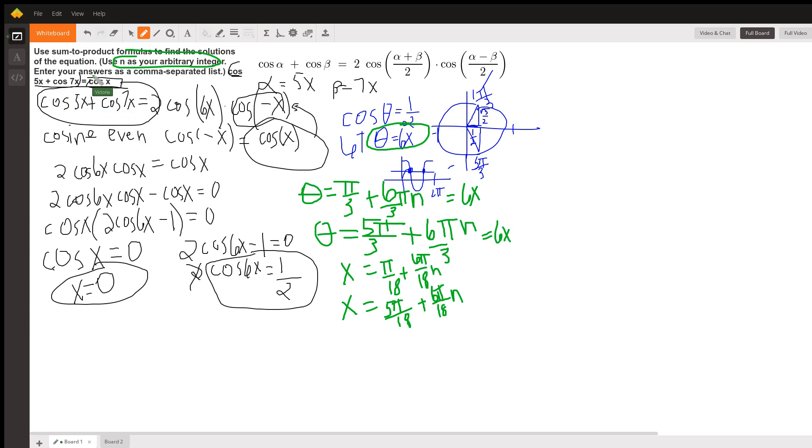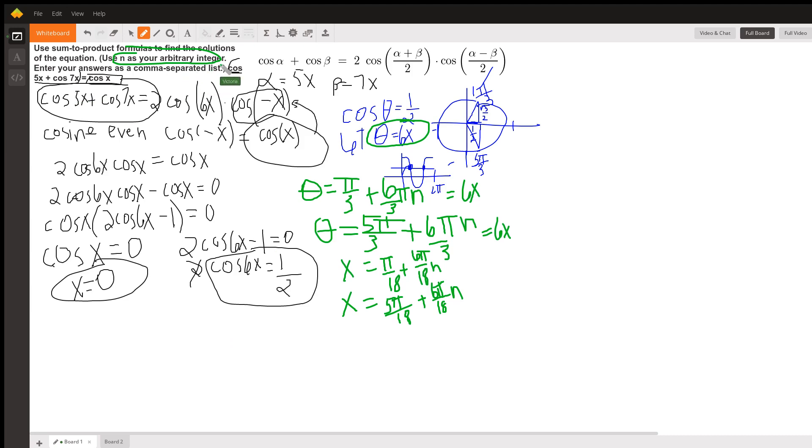And since your teacher wants it in a comma separated list, it would look like this. So this is gonna be 5 pi over 18 plus x equals 0. Now, if your teacher wants you to simplify the fraction, then this is gonna be pi over 18 plus pi over 3. Maybe we should say n pi over 3. And this is gonna be 5 pi over 18 plus n pi over 3. And there's your comma separated list of all the solutions.